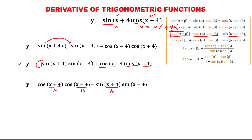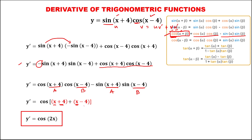Using the sum and difference identity: cosine A cosine B minus sine A sine B equals cosine(A+B). Here A is x+4 and B is x-4. So y prime equals cosine((x+4)+(x-4)) — x plus x is 2x, and negative 4 plus positive 4 is 0. Therefore the derivative is cosine 2x.